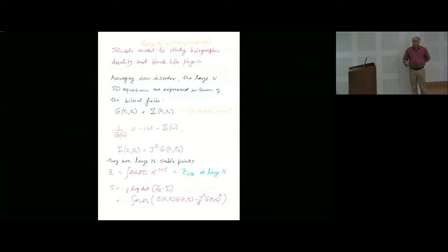You have the Schwinger-Dyson equations in large N limit given in terms of these bi-local operators. Note that sigma is proportional to J-square. This action is just given by log determinant of some Pfaffian type of operator. You minimize, vary with respect to sigma and G, and back you get these equations.